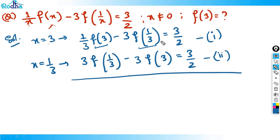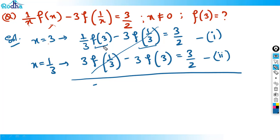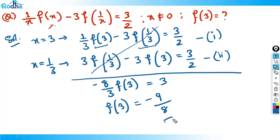Adding Equation 1 and Equation 2, the −3·f(1/3) and +3·f(1/3) terms cancel. We get (1/3 − 3)·f(3) = 3/2 + 3/2, which gives (−8/3)·f(3) = 3. Therefore f(3) = −9/8. That is the answer.